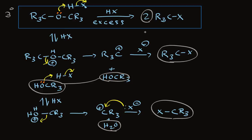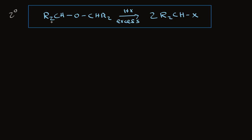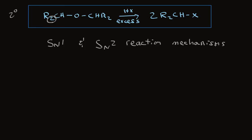So we looked at primary ethers and tertiary ethers. What about secondary ethers? Now we've got two alkyl groups attached to the carbon, and this complicates things, because secondary carbons lose leaving groups in both SN1 and SN2 reactions. So we can expect a mixture of both, and the exact structure will determine whether there is more SN1 or more SN2. But in any case, the result is the same: we treat a secondary ether with HX and we make two moles of the secondary alkyl halide.